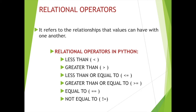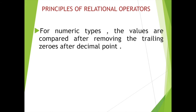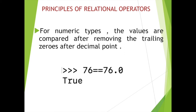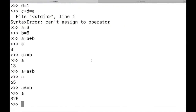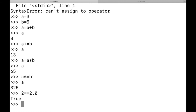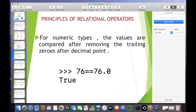When using relational operators, the first principle to know is that for numeric values, comparison is done after removing trailing zeros after the decimal point. So 76 == 76.0 is considered the same. Relational operators always return a result of either True or False. For example, 2 == 2.0 returns True.